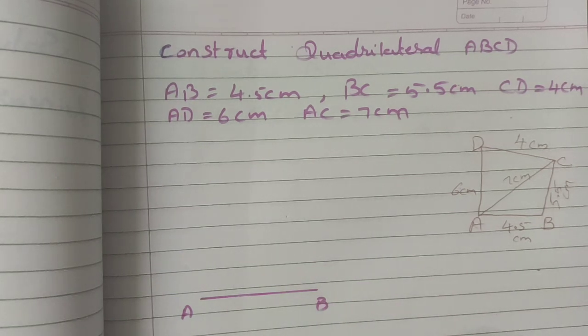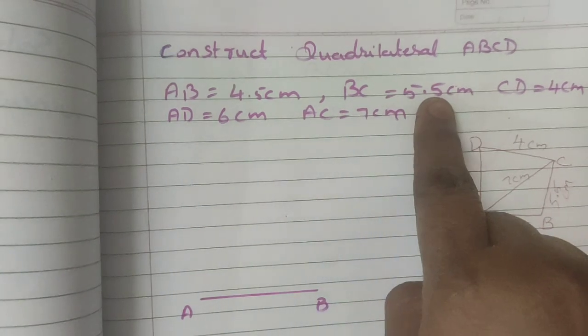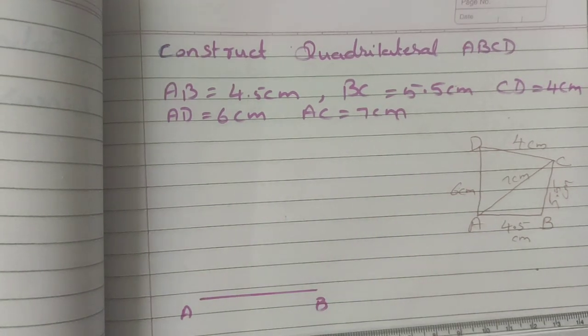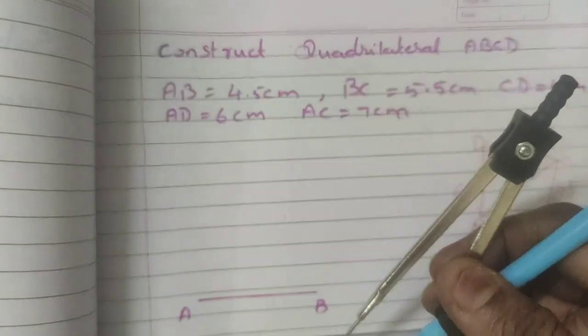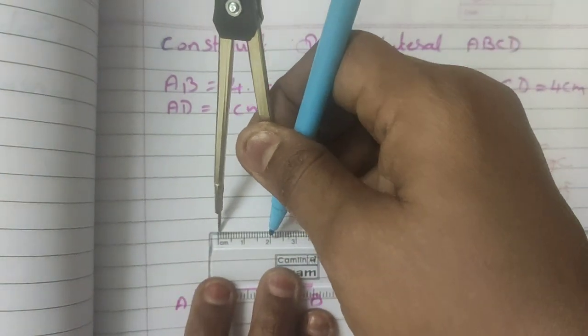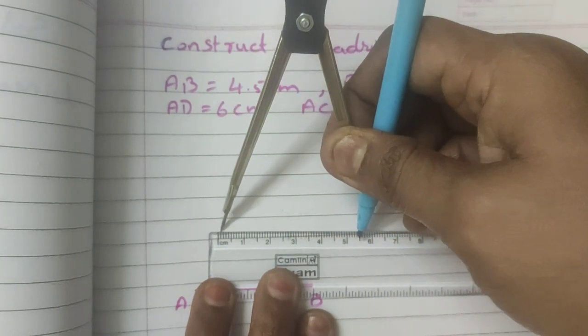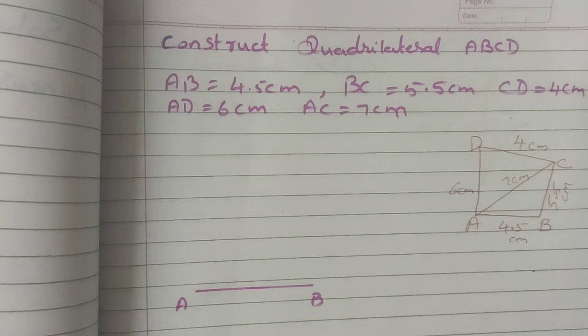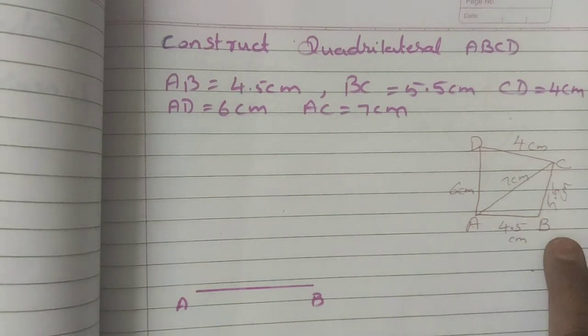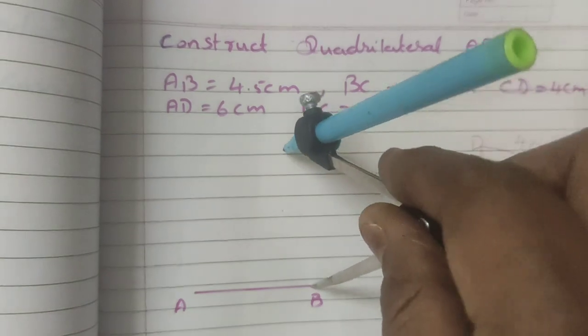Now what is the measurement BC? BC is equal to 5.5 cm. So in your compass, take your compass, measure 5.5 cm in your compass. BC is 5.5 cm. So keep your compass needle at B, mark an arc.